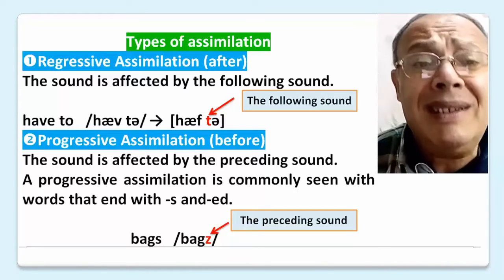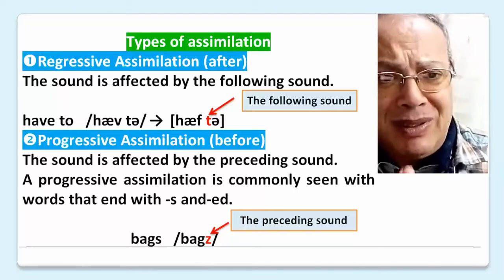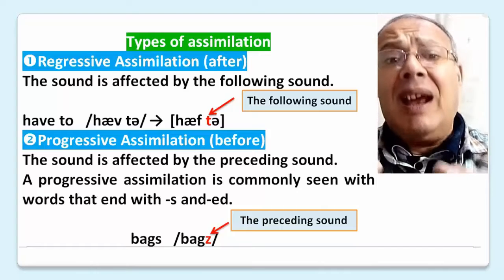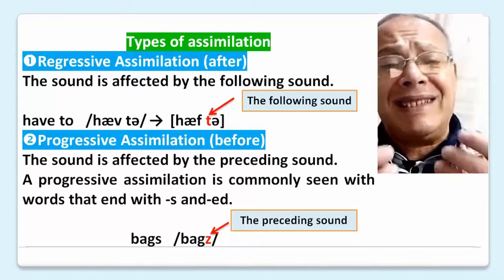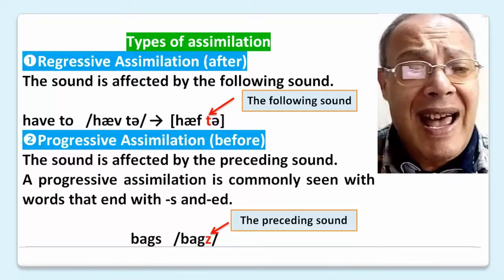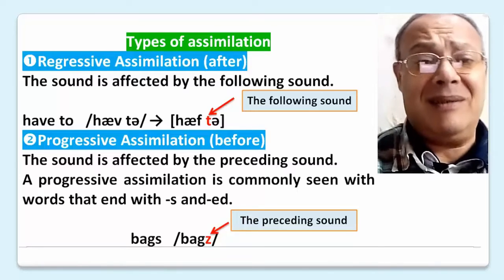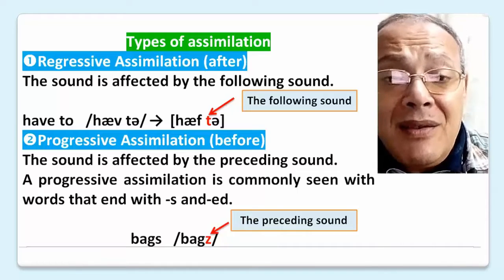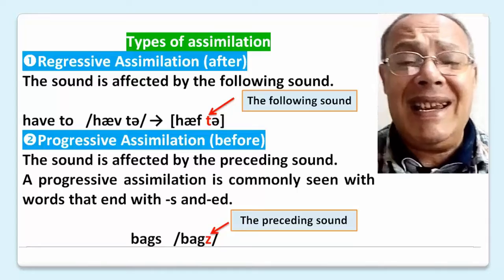Progressive assimilation is commonly seen with words that end with -s and -ed. For example, 'begs' — the preceding sound is z, which influences the final sound.